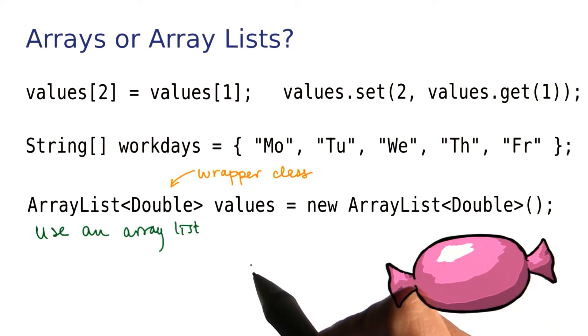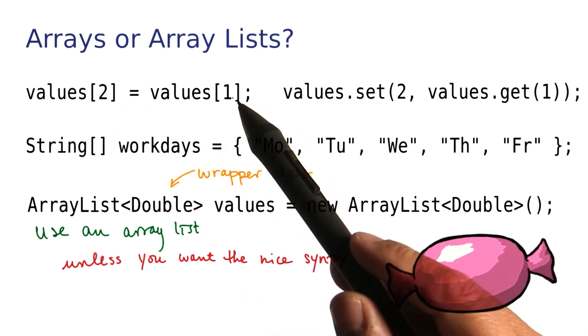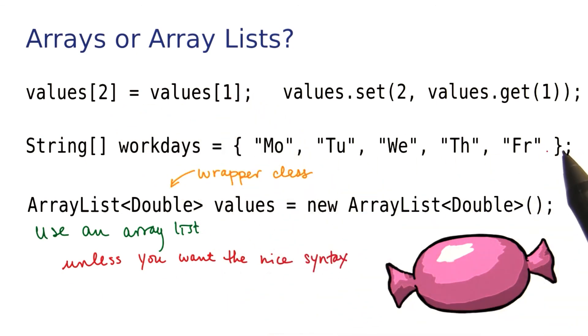In conclusion, you use an ArrayList as a rule of thumb, unless you want the nice syntax that an array gives you, having the brackets, having the initializers, or you collect lots of numbers. In that case, ArrayLists are quite inefficient.